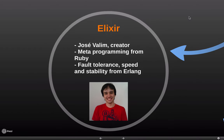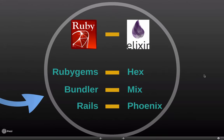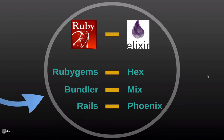You'll need more than Elixir to build web applications though. Ruby has RubyGems and Rake and Bundler for setting up projects. Elixir has a Hex package manager and the Mix build tool. For building web applications, Ruby has Rails.